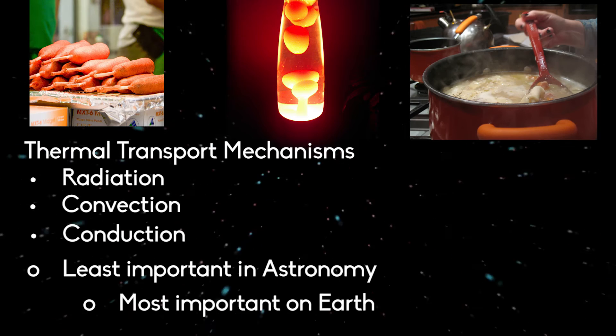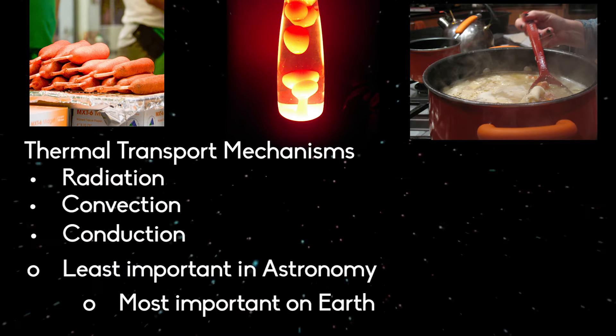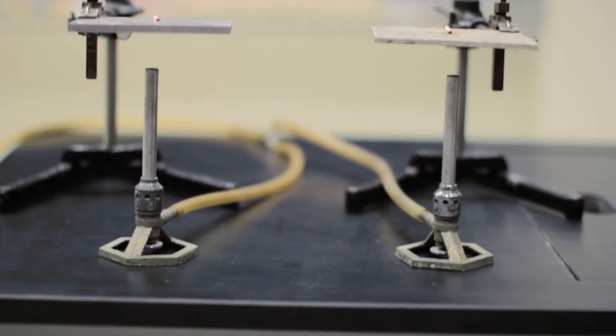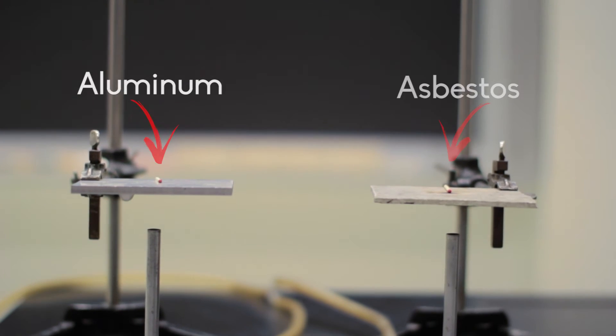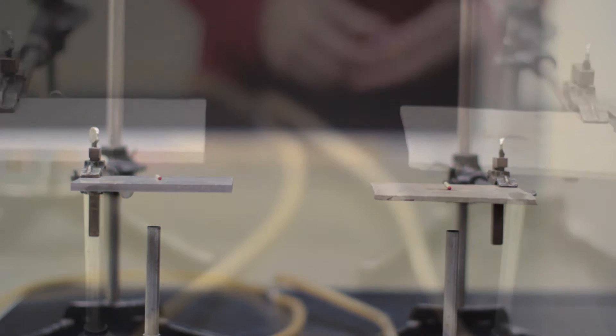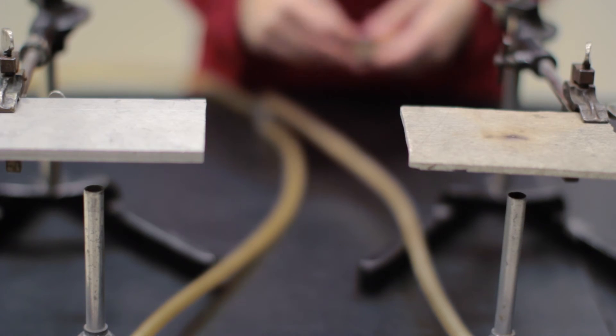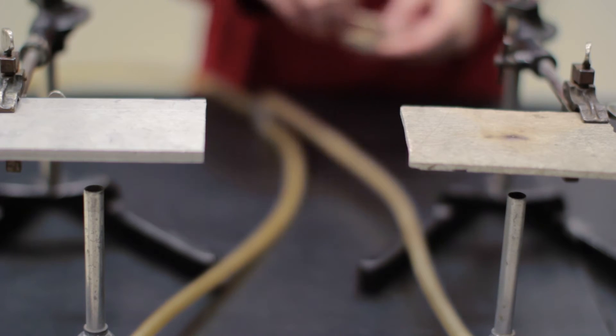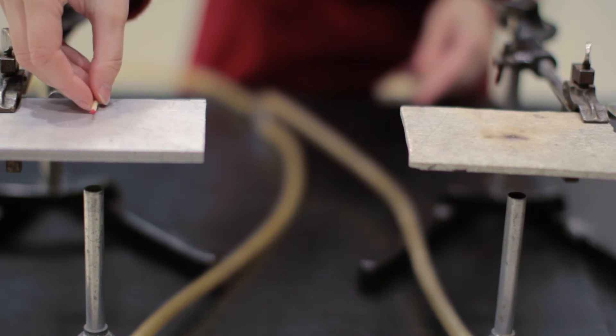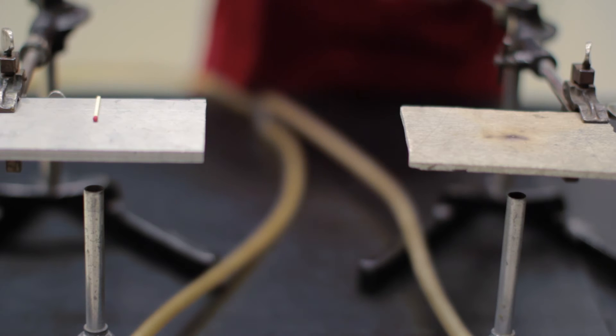Conduction is the most significant mechanism of thermal transport on Earth. Let's explore conduction using the following. Consider slabs of aluminum and asbestos, a silicate material that was commonly used as insulation until it was found to be carcinogenic. Both slabs are of similar thicknesses, are mounted at the same distances above Bunsen burners, and we have placed a matchstick on top of each slab.